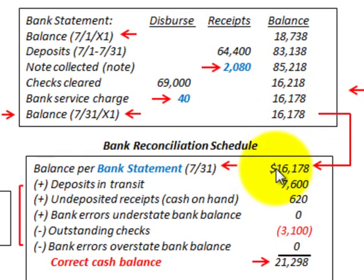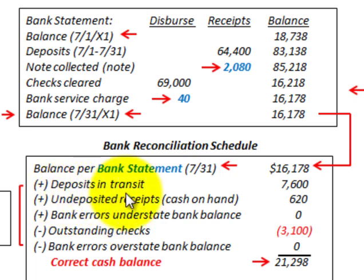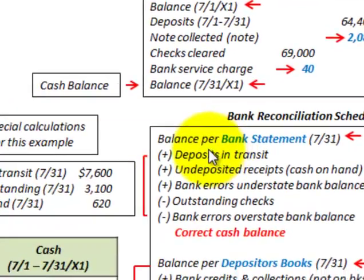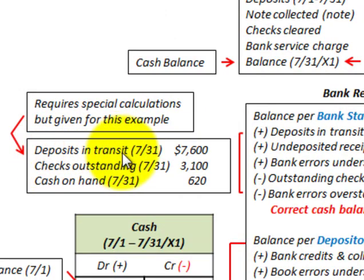Now we'll go through the additions and subtractions we have to make to reconcile the bank statement and the depositor's books. These additions and subtractions are the same regardless of which bank reconciliation you're doing. First, we have deposits in transit — deposits at the end of the month on July 31 that haven't been received by the bank yet. In this case, deposits in transit are $7,600.